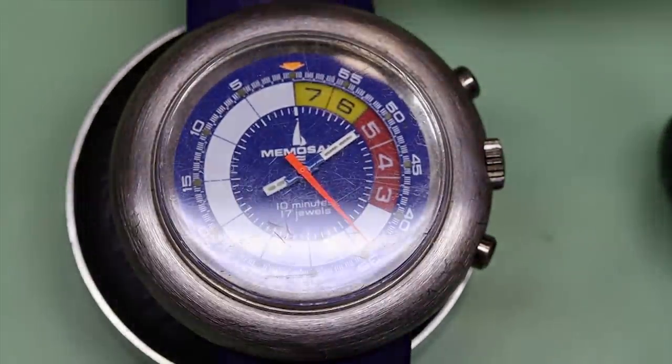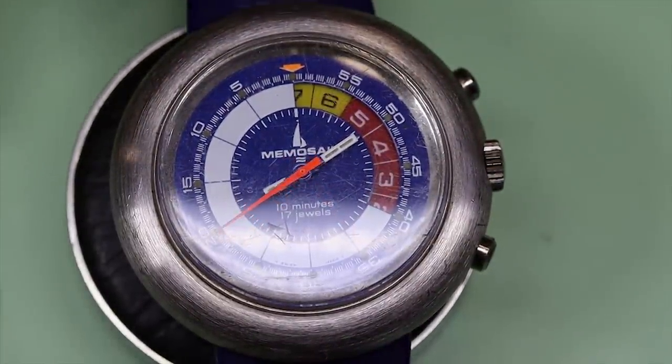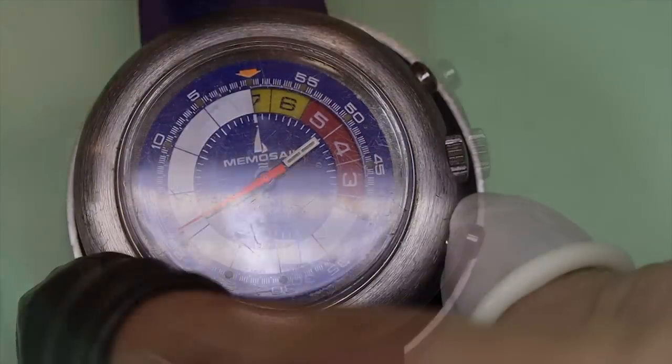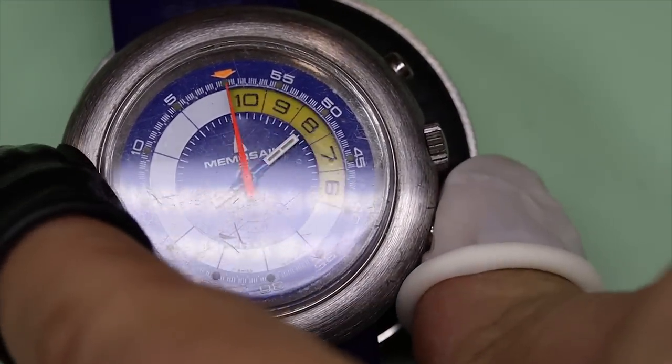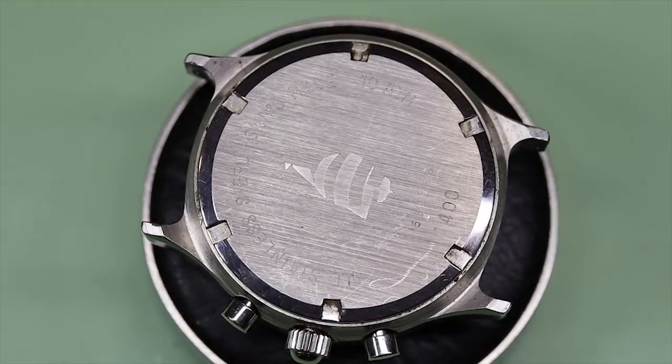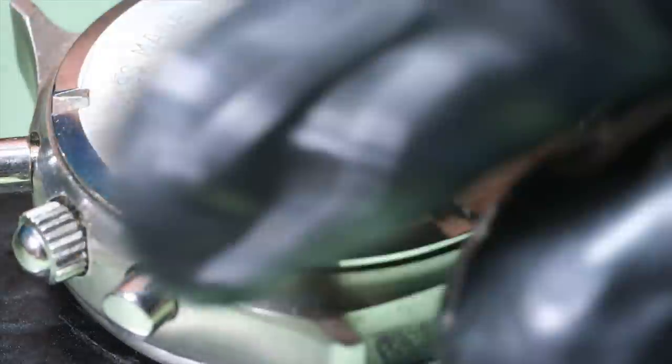So I kind of get a Crocodile Dundee vibe here - he's got a knife, that's not a knife, this is a knife. This is an actual regatta watch we'll see on the channel later.